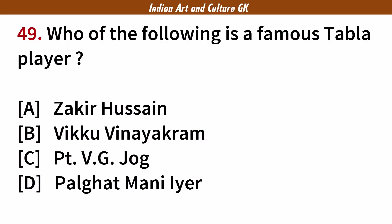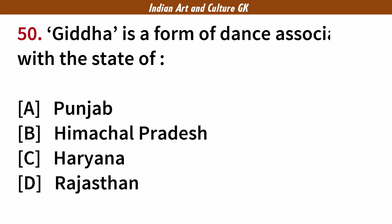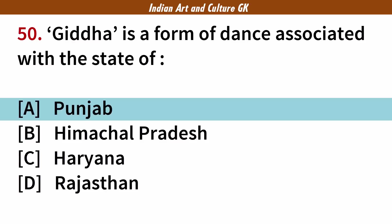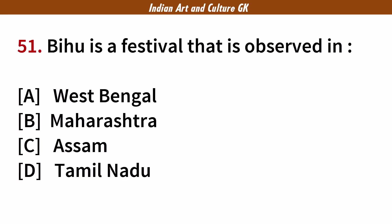Who of the following is a famous tabla player? Answer: A. Zakir Hussain. Giddha is a form of dance associated with the state of? Answer: A. Punjab. Bihu is a festival that is observed in? Answer: C. Assam.